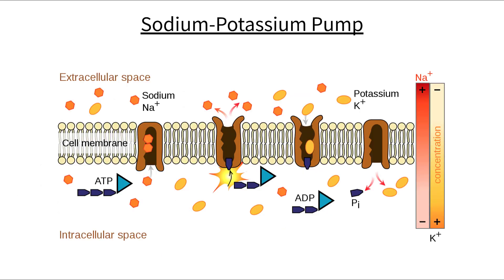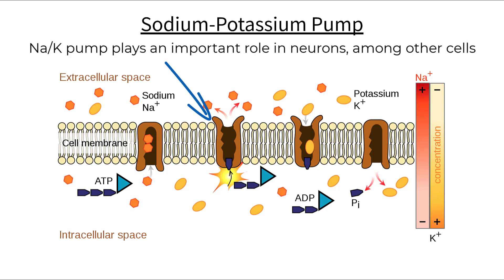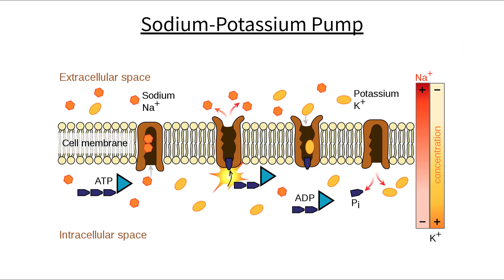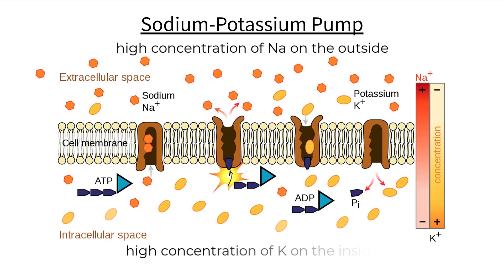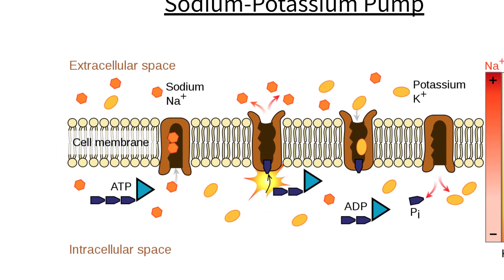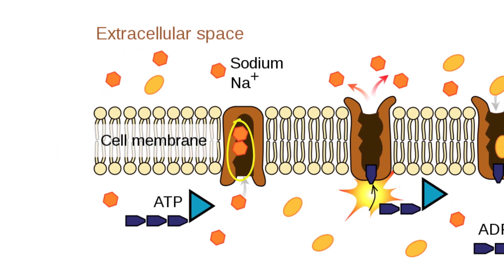Let's take a look at a specific example of active transport using a well-known protein called the sodium-potassium pump. This protein is found in many cells within your body, but plays a critical role with balancing and maintaining concentration gradients in neurons, which are specialized cells that make up your nervous system. For neurons to work properly, they require a specific resting gradient of sodium and potassium ions — they need a high concentration of sodium on the outside and potassium on the inside. To achieve this goal, they use the sodium-potassium pump. The process starts when three sodium ions bind to the internal sites of the pump.